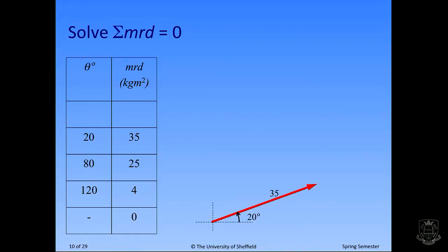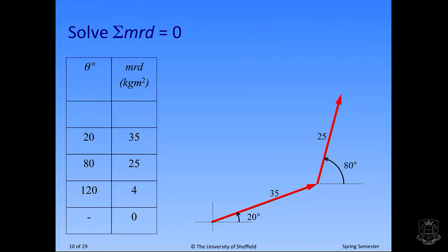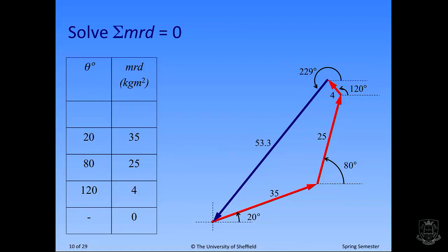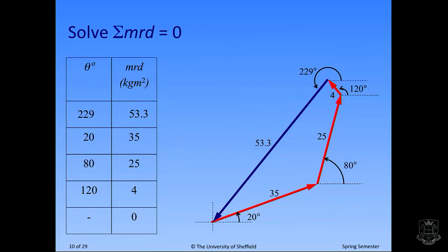When solving this, you're making the sum of MRD components equal zero, which you can represent as a vector sum. Starting with the known vectors: magnitude 35 at angle 20 degrees, magnitude 25 at 80 degrees, and magnitude 4 at 120 degrees. The missing vector closes the loop. There's a reason for showing the sketch - when doing the analytical calculation, it becomes crucial to know roughly what angle you're looking for, because arctan only gives the primary value between plus or minus 90 degrees.